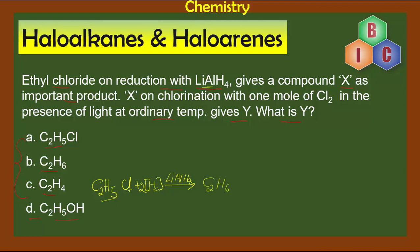C₂H₅ takes up the H and becomes C₂H₆, and the remaining hydrogen takes up the Cl to form HCl. So compound X — the product of reduction of ethyl chloride with lithium aluminium hydride — is ethane, C₂H₆.